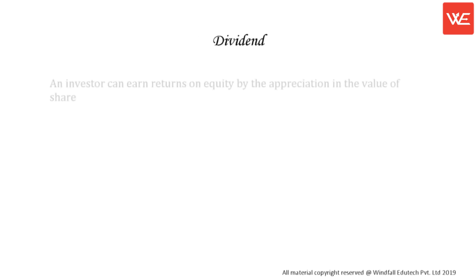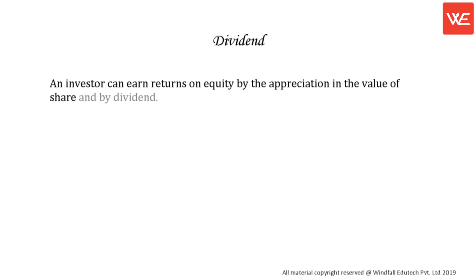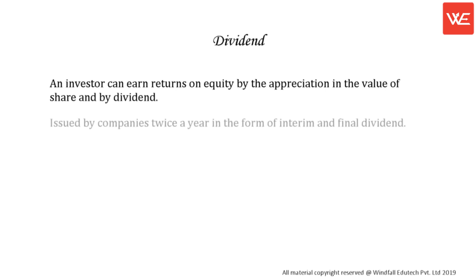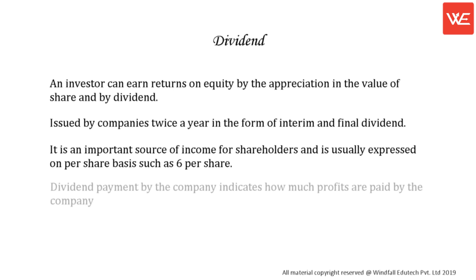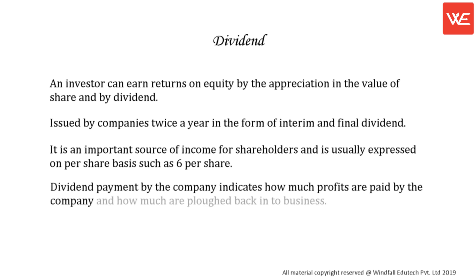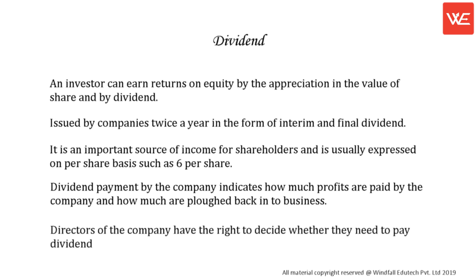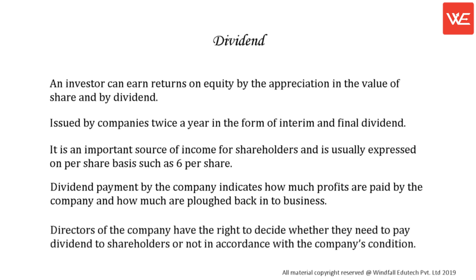Dividend. An investor can earn returns on equity by the appreciation in the value of shares and by dividend. It is issued by companies twice a year in the form of interim and final dividend. It is an important source of income for shareholders and is usually expressed on a per share basis, such as six rupees per share. Dividend payment indicates how much profits are paid out by the company and how much are plowed back into business. Directors of the company have the right to decide whether they need to pay dividends to shareholders in accordance with the company's condition.